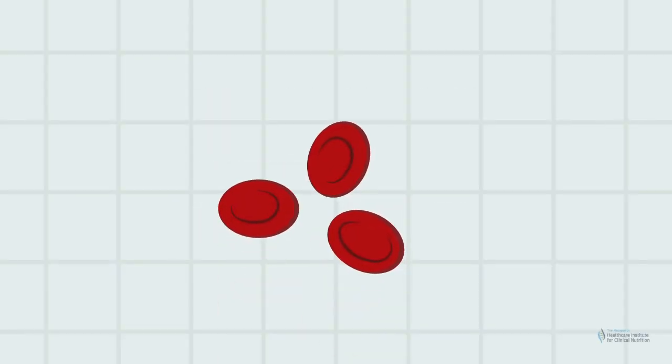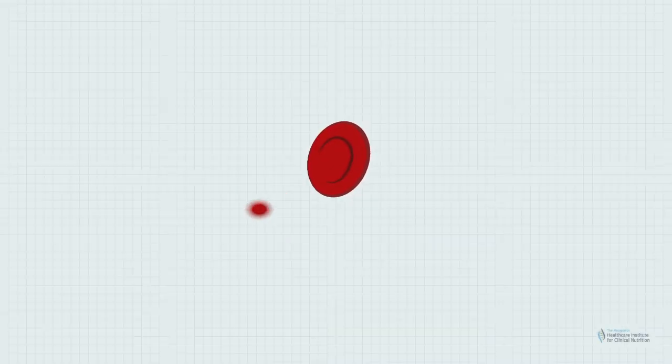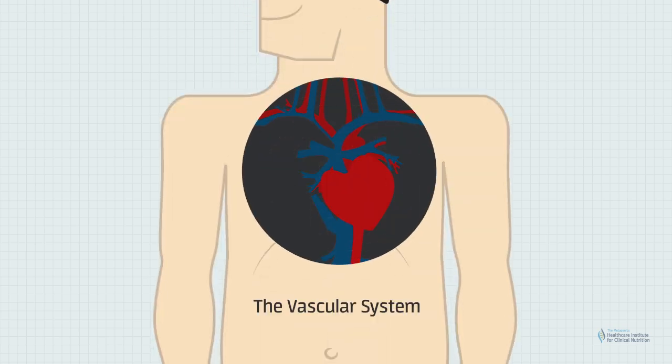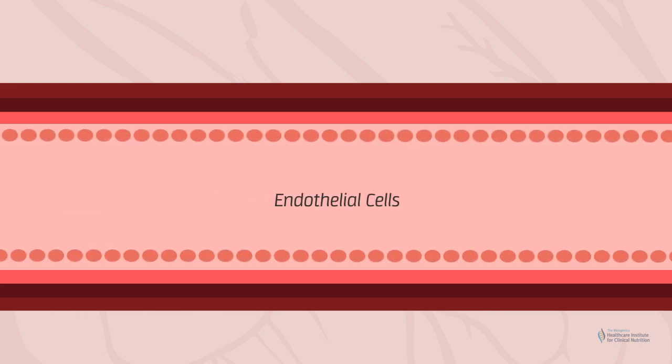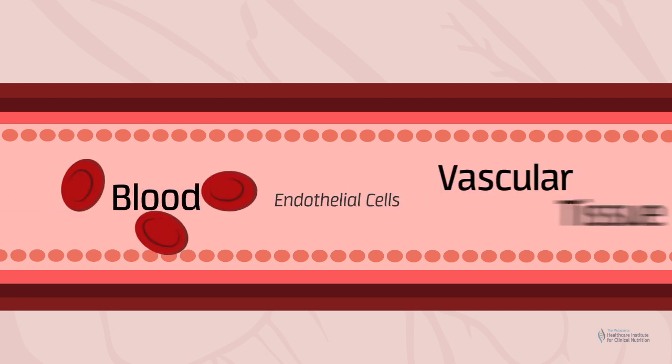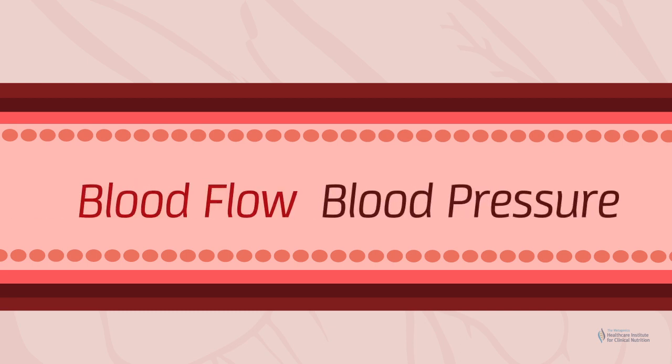Blood flows through a complex network of blood vessels known as the vascular system. Blood vessels have a layer of smooth muscle surrounded by a thin single layer of endothelial cells. Endothelial cells interface between blood and underlying vascular tissue; they can respond to changes in blood pressure and blood flow.